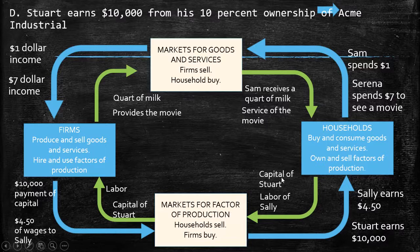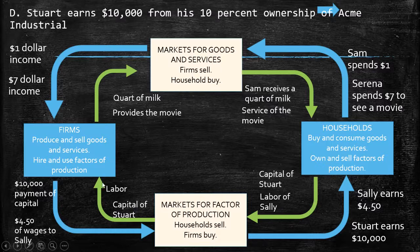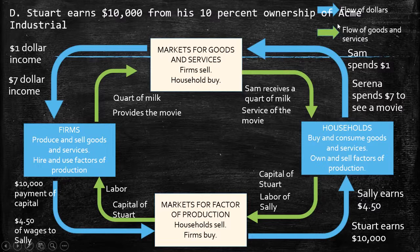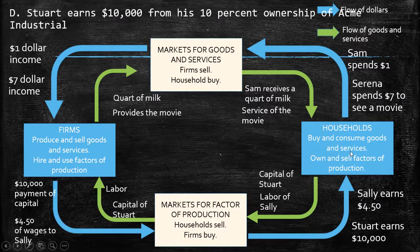To summarize the pattern across all four activities: Sam receives $1 and provides milk; Serena receives the movie service and they receive $7; Stuart provides capital and receives income; Sally provides labor and receives wages. It's essentially the same structure. The blue arrow represents the flow of dollars, and the green arrow represents the flow of goods and services. Stuart received income because of his ownership of Acme Industrial.